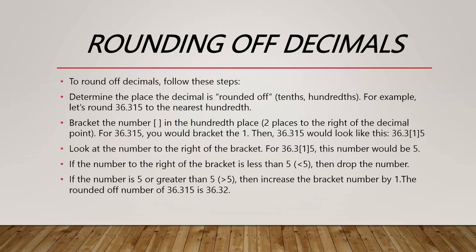First, put a bracket on the number in the hundredth place. The hundredth place is the second number to the right of the decimal point. For 36.315, we put the bracket on the 1, giving us 36.3[1]5.